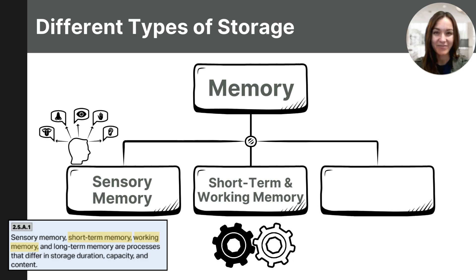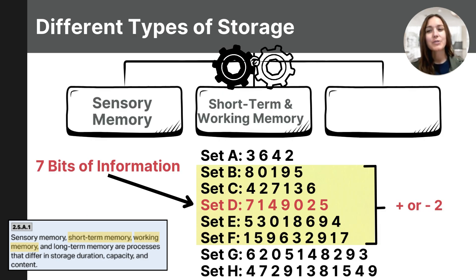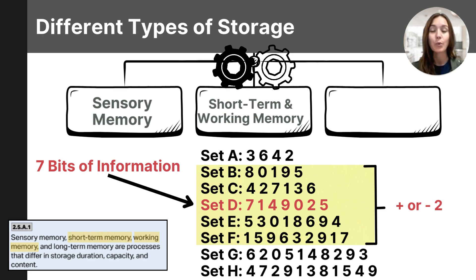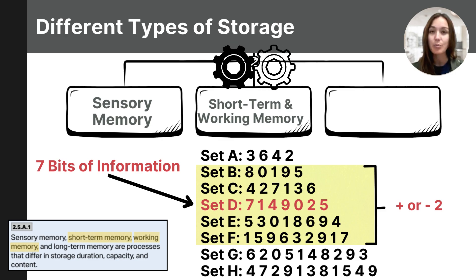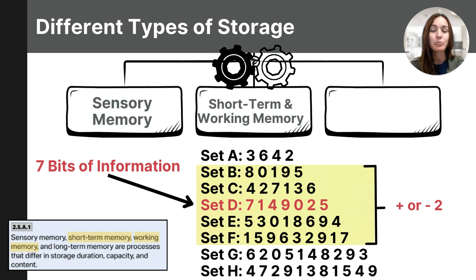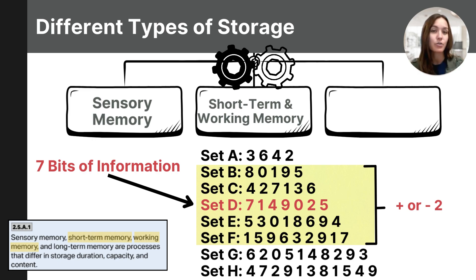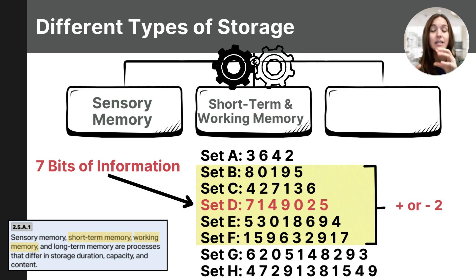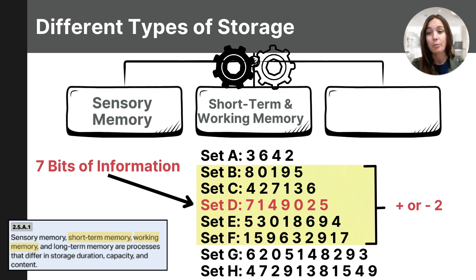How did that go? Set A had four items and each set following added one additional item. I imagine you were able to easily remember set A and probably set B. As each set added an additional item, it should have gotten more and more challenging — especially towards the end. And the reason for this is because your short-term memory has a capacity of about seven bits of information at a time.